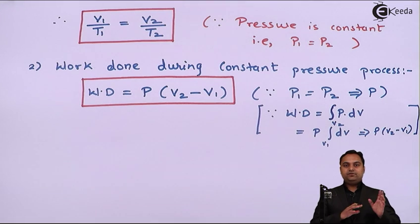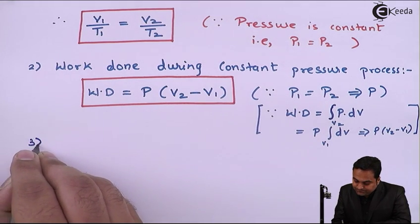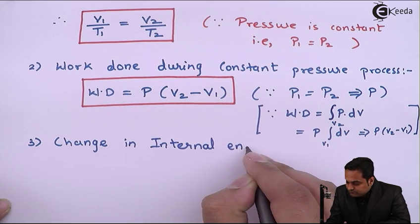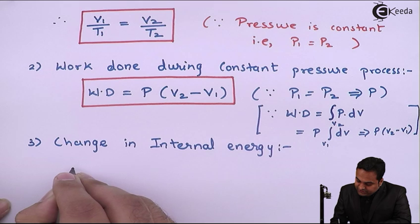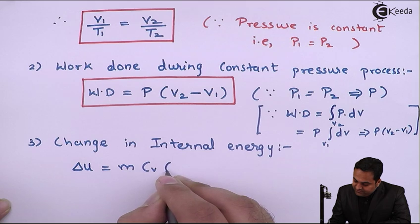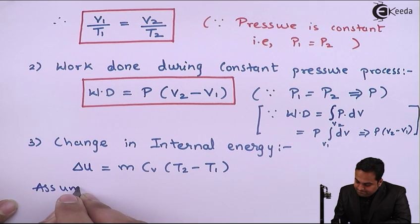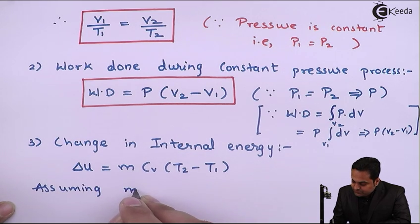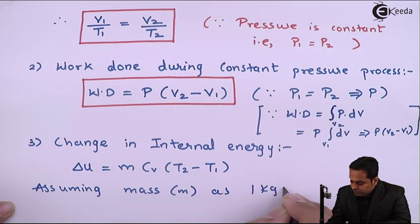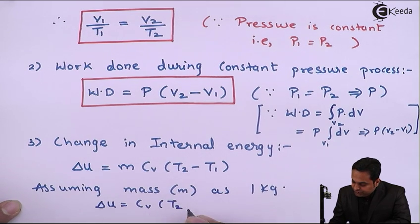Next is the change in internal energy. The change in internal energy is denoted by delta U, which equals m·Cv·(T2 minus T1). Assuming mass as 1 kg, the change in internal energy equals Cv·(T2 minus T1).